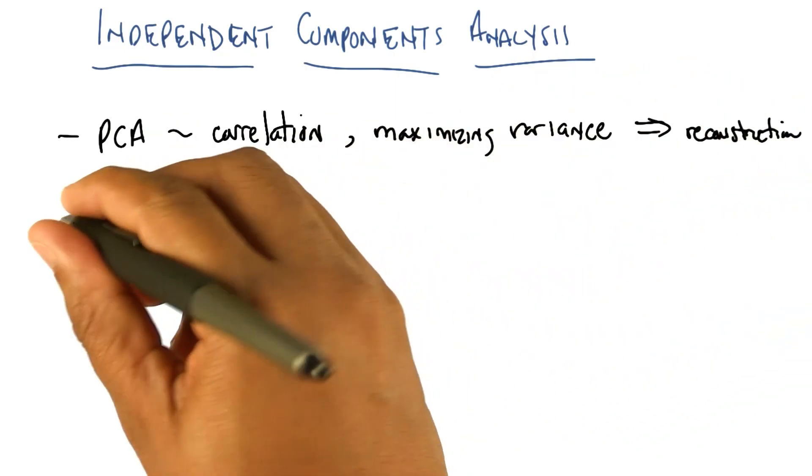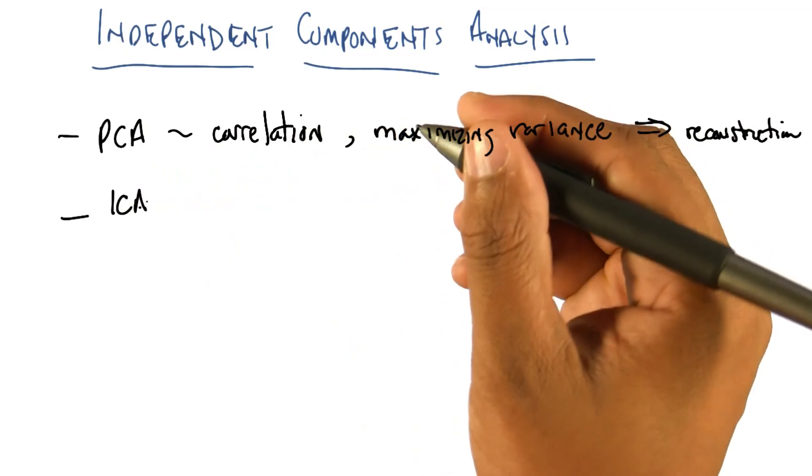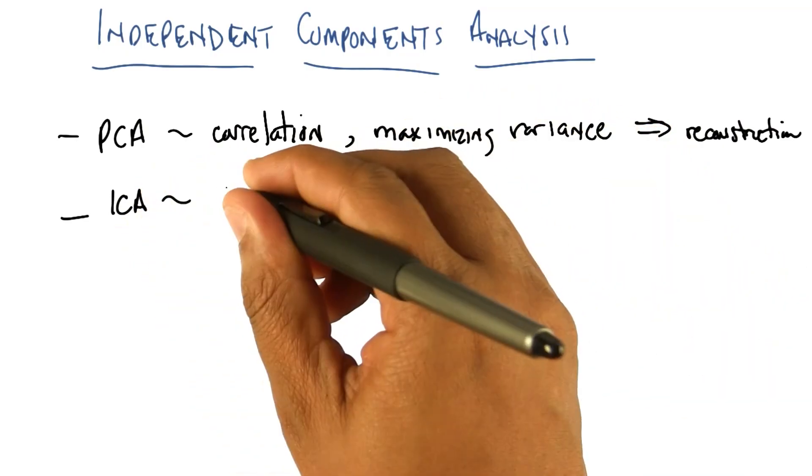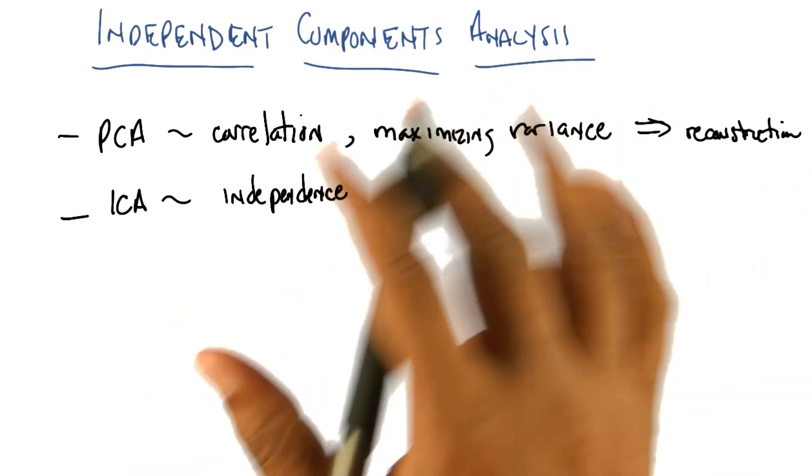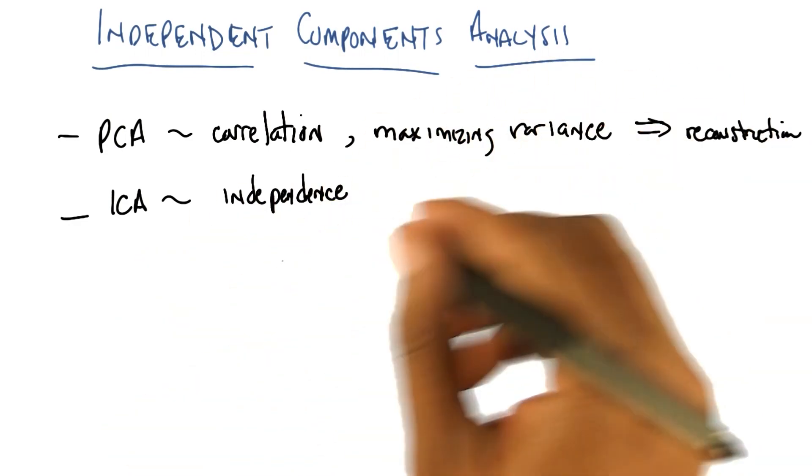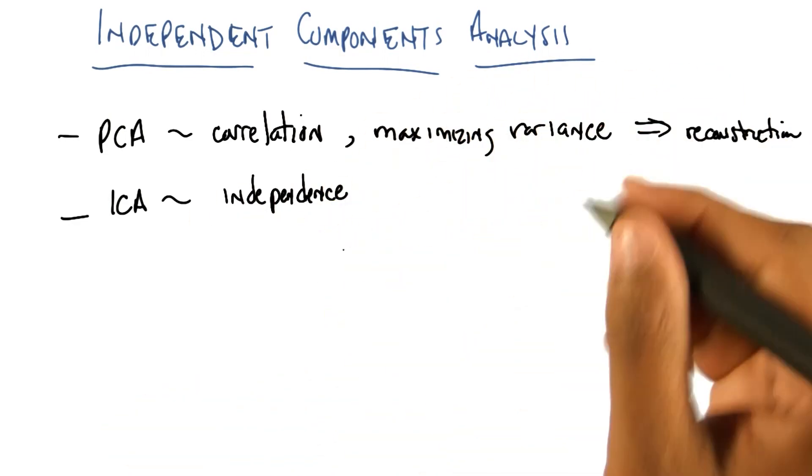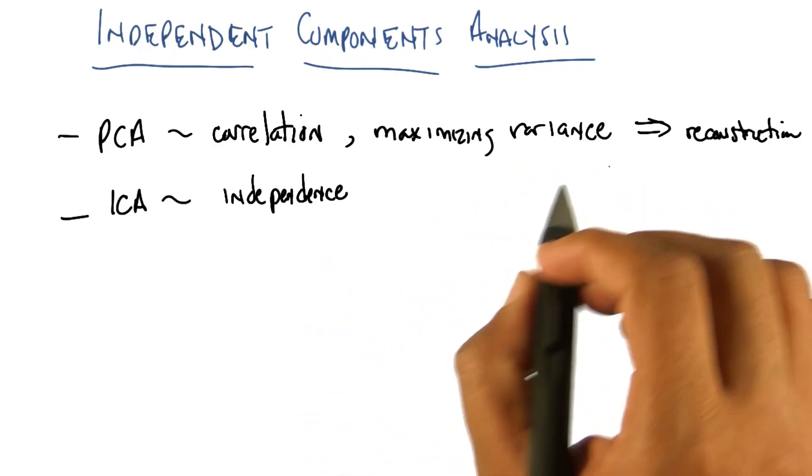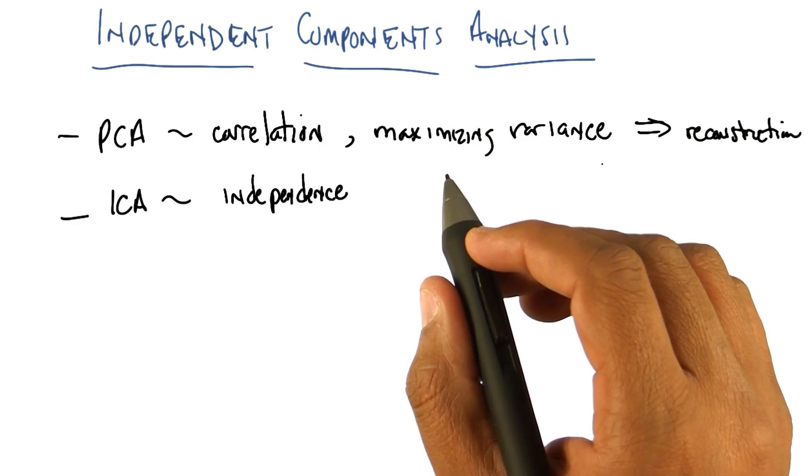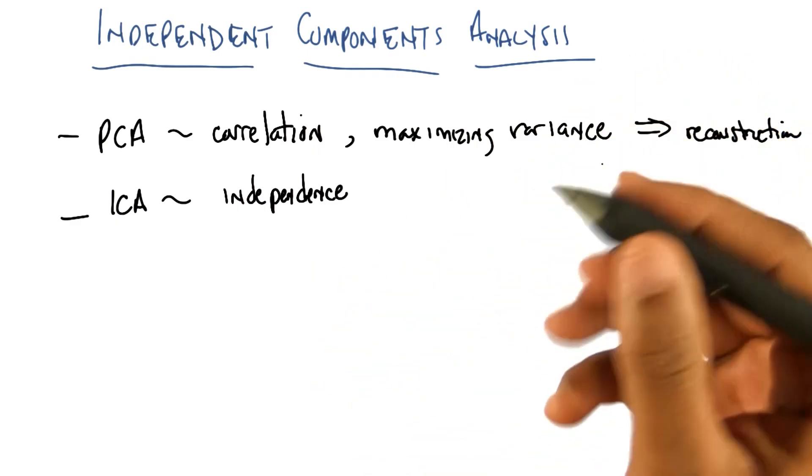What independent components analysis is doing, often called ICA by those in the know, is it's trying to maximize independence. Very simply put, it tries to find a linear transformation of your feature space into a new feature space such that each of the individual new features are mutually independent. And I mean that in a statistical sense.